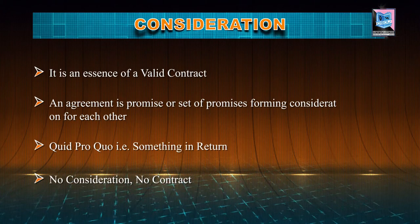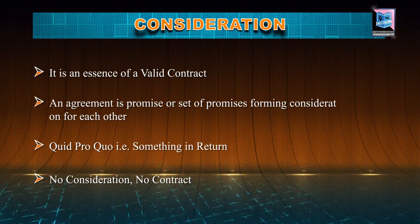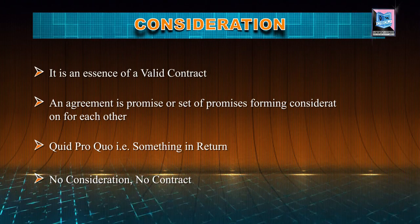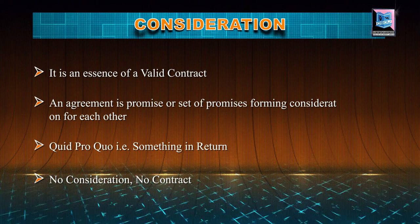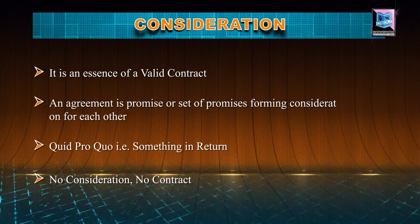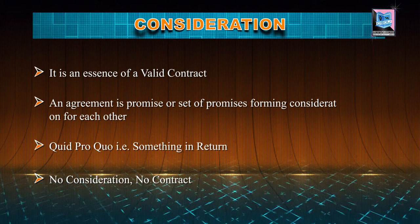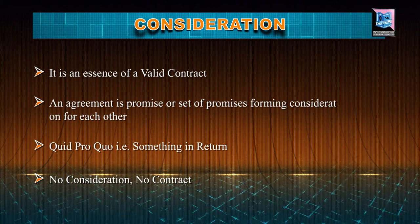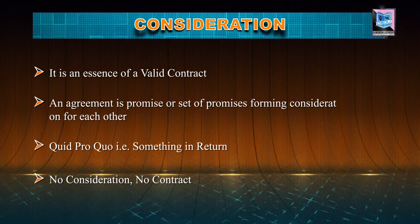Coming to the next aspect of the essentials of a valid contract: consideration. Consideration is the essence of the valid contract. As already discussed in the term agreement, an agreement is the promise or set of promises forming consideration for each other. So we can say that in an agreement, the essence is consideration. Consideration is something in return — it is also termed as quid pro quo, which means something in return. It is generally said that when there is no consideration, no contract can be entered. Moving to the definition of consideration provided by the Indian Contract Act 1872.